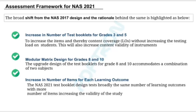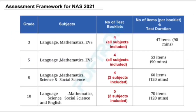Third, an increase in the number of items for each learning outcome. In grade 3: Language, Mathematics, and EVS — 4 test booklets including all subjects, 47 items for a duration of 90 minutes. For class 5: Language, Mathematics, and EVS — same as grade 3 structure, 53 items for a duration of 90 minutes. For grade 8: Language, Mathematics, Science, and Social Science — 4 booklets with 2 subjects each, having 60 items for a duration of 120 minutes.